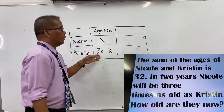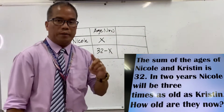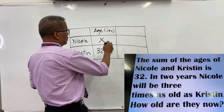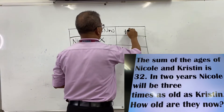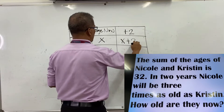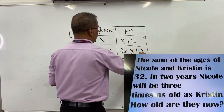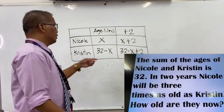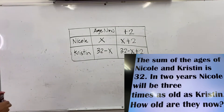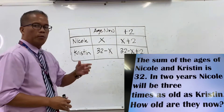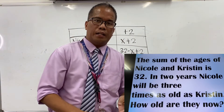The second sentence says in two years Nicole will be three times as old as Christine. So in two years, we add 2 to each: Nicole becomes x plus 2, and Christine becomes 32 minus x plus 2. From that we can construct the linear equation.